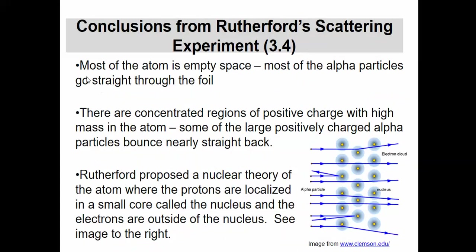Conclusions from Rutherford's experiment - these are important. Most of the atom is empty space; most alpha particles go straight through the foil. Think of that nucleus as sitting there with the next nucleus like a football field away. There are concentrated regions of positive charge with high mass in the atom. Some large positively charged alpha particles bounce nearly straight back. Rutherford proposed the nuclear theory we currently use, where we have a nucleus that contains the protons and neutrons, contains the positive charge and mass of the atom. The electrons are another chapter.